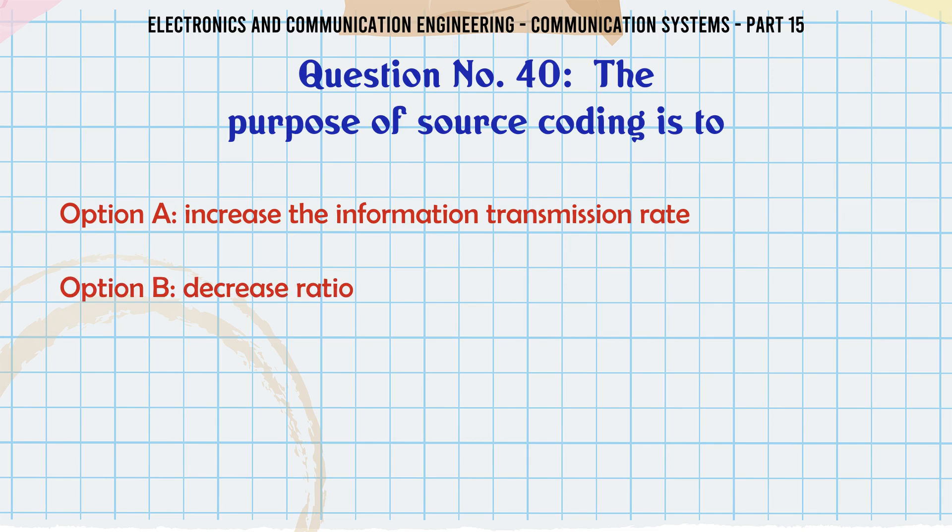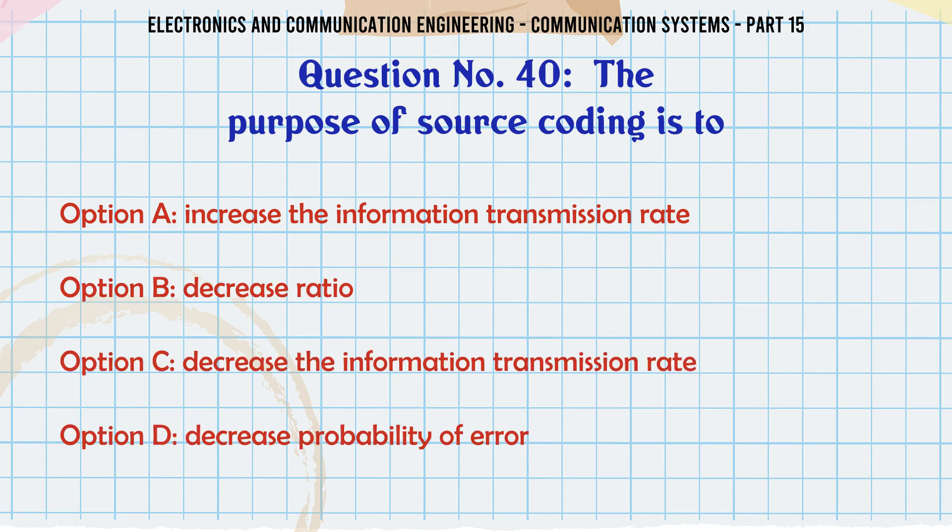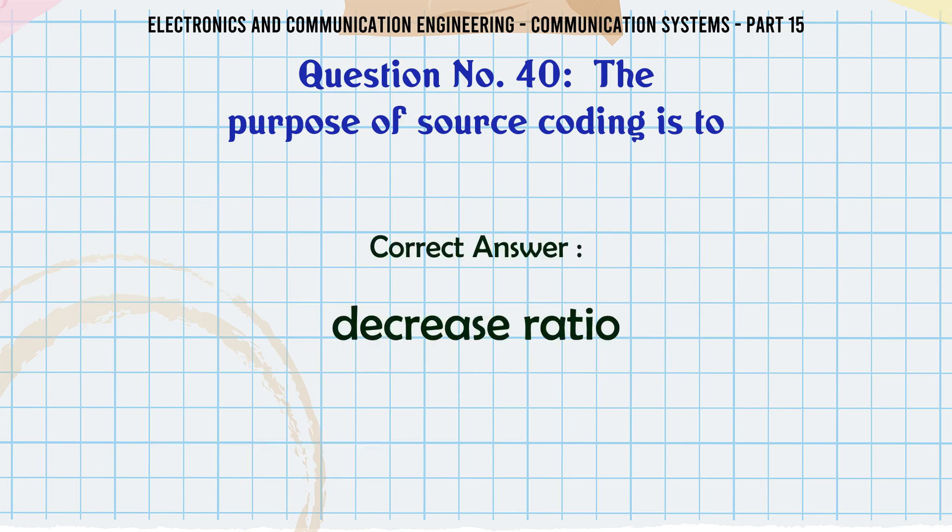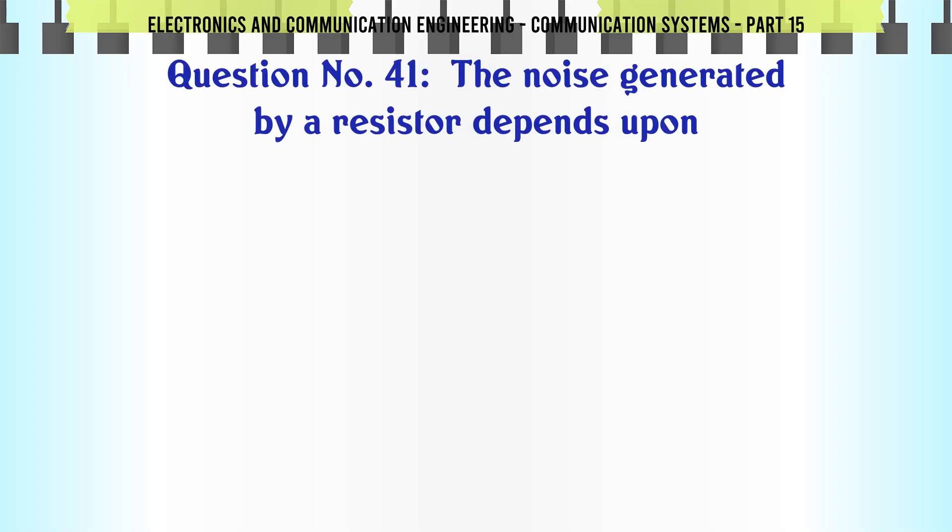The purpose of source coding is to: A increase the information transmission rate, B decrease ratio, C decrease the information transmission rate, D decrease probability of error. The correct answer is decrease ratio.